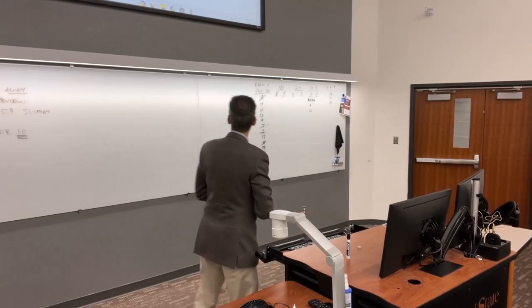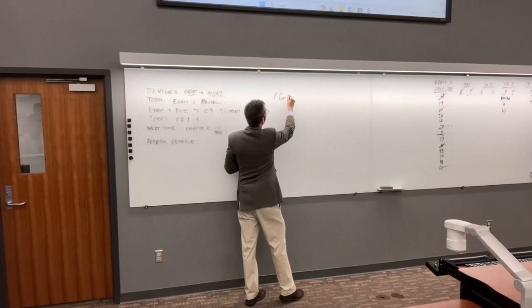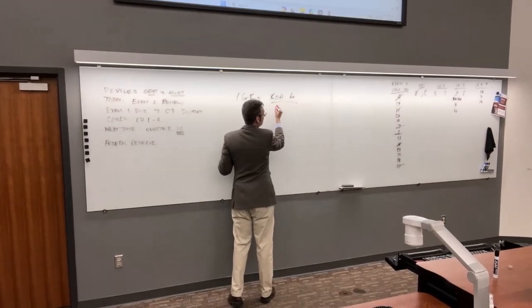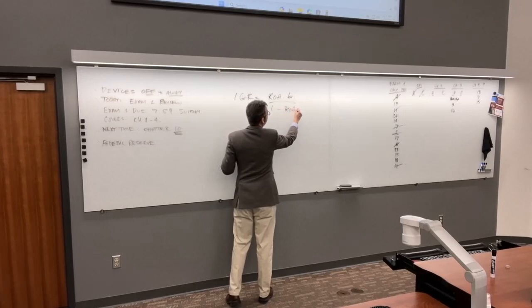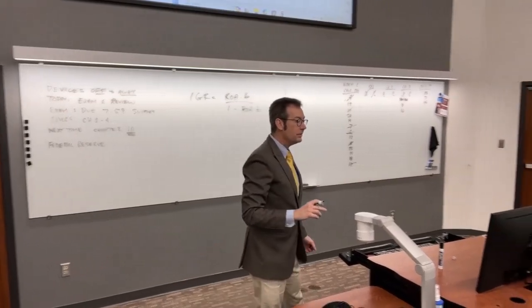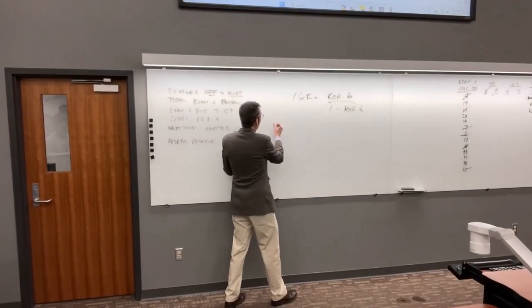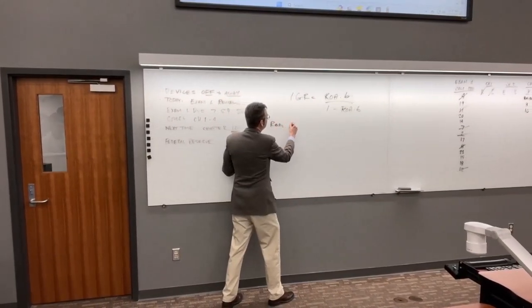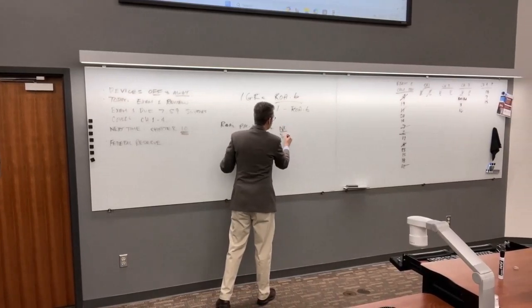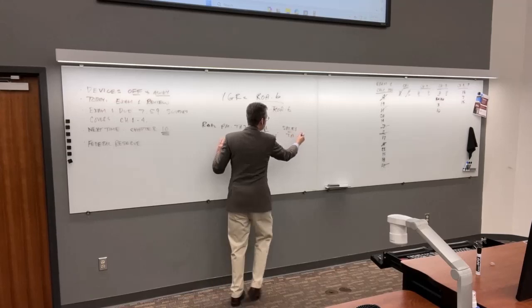The internal growth rate (IGR) equals ROA times B, divided by 1 minus ROA times B. ROA equals profit margin times total asset turnover. That's net income over sales, times sales over total assets — sales cancels out, leaving net income over total assets.